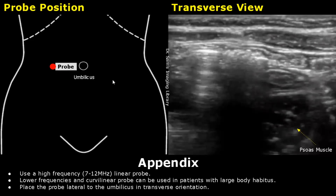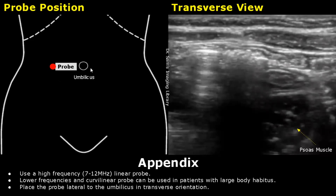The appendix has a variable location in the right lower quadrant. Use a high frequency linear probe with a frequency between 7 to 12 megahertz. In patients with a larger body habitus, use lower frequencies and you can even use a curvilinear probe. You can start by placing the probe lateral to the umbilicus in transverse orientation.